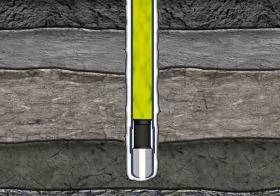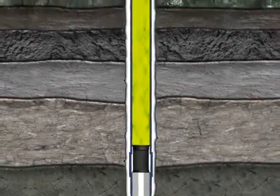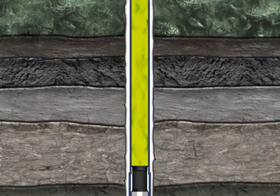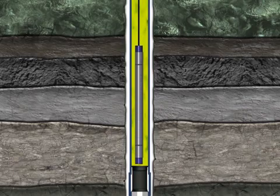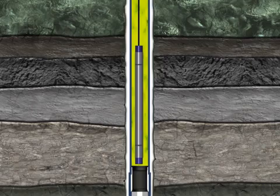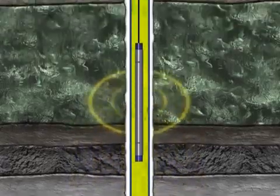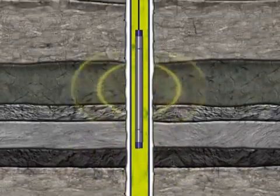The cementing process is not always a flawless operation, and the resulting cementing job might contain some bonding issues that would undermine the strength and integrity of the casing, especially during perforation. The bond of the cement with the formation and with the casing is evaluated using a cement evaluation wireline tool. This tool determines whether the cement job is optimal. If not, further remedial operations are required.